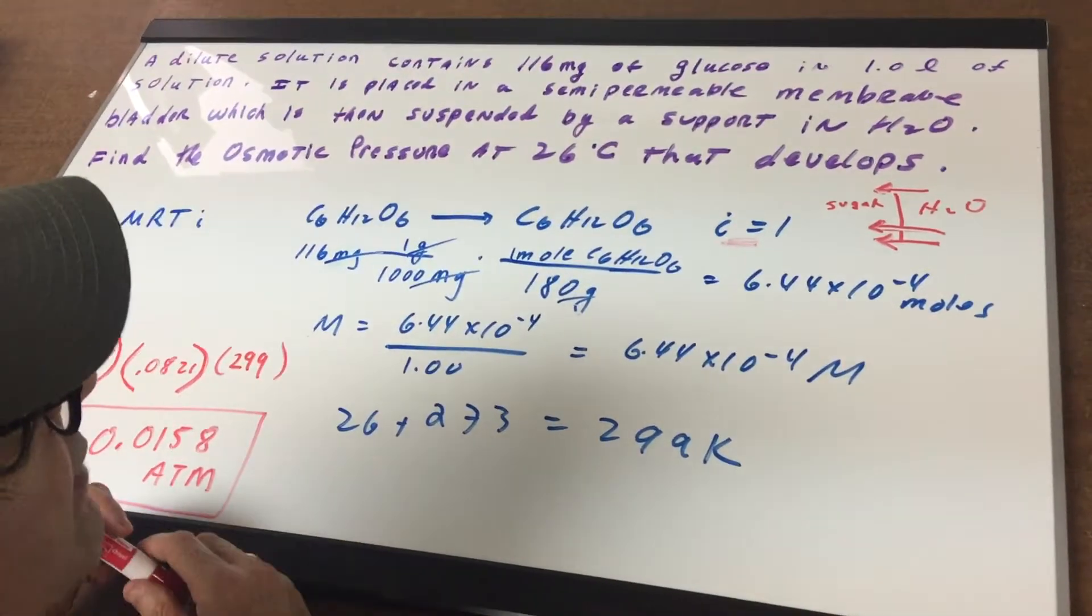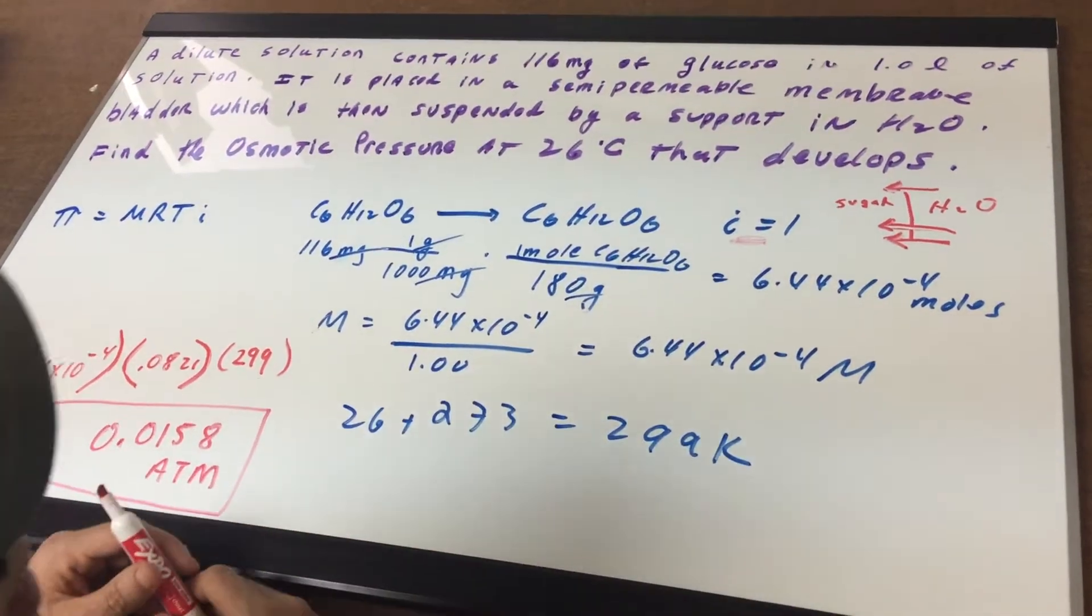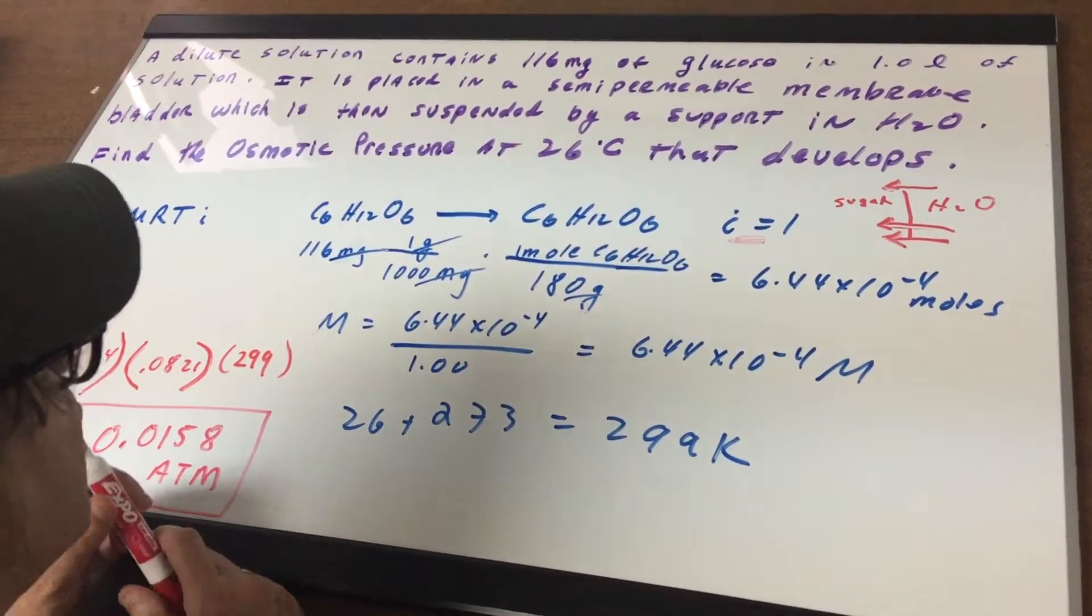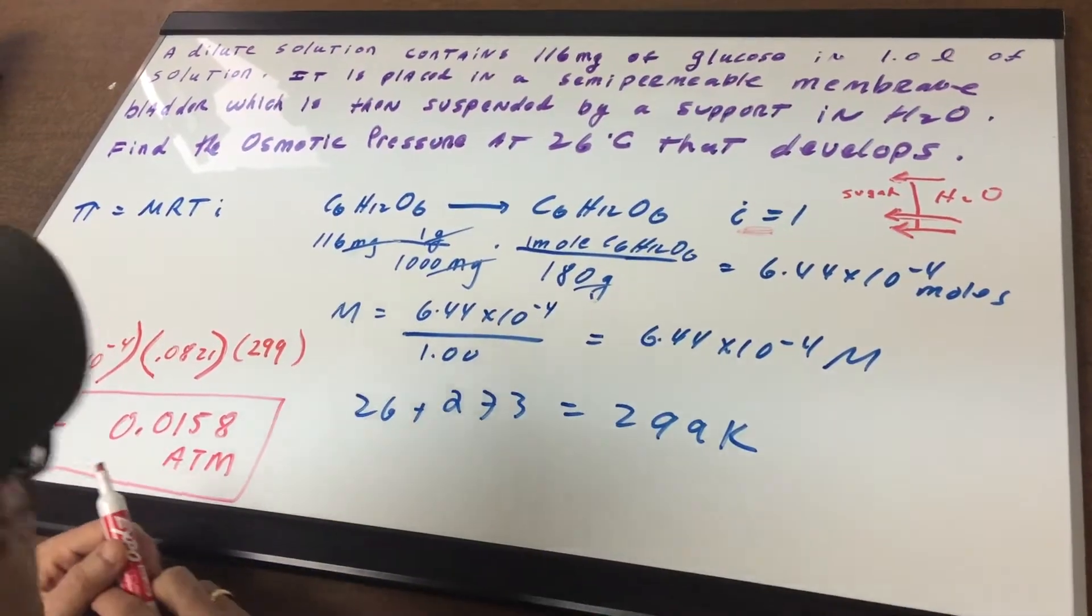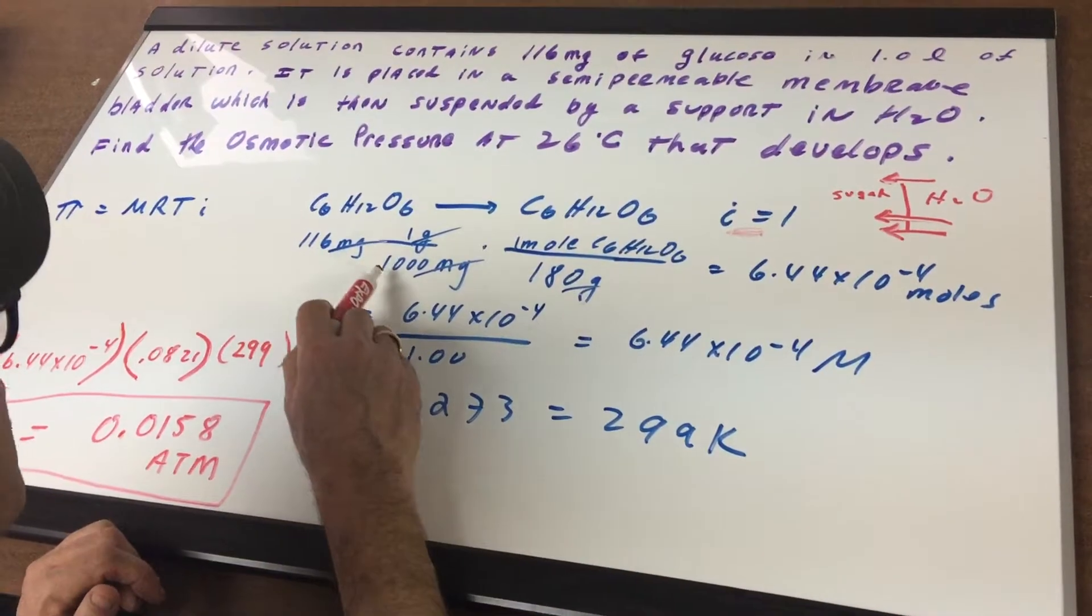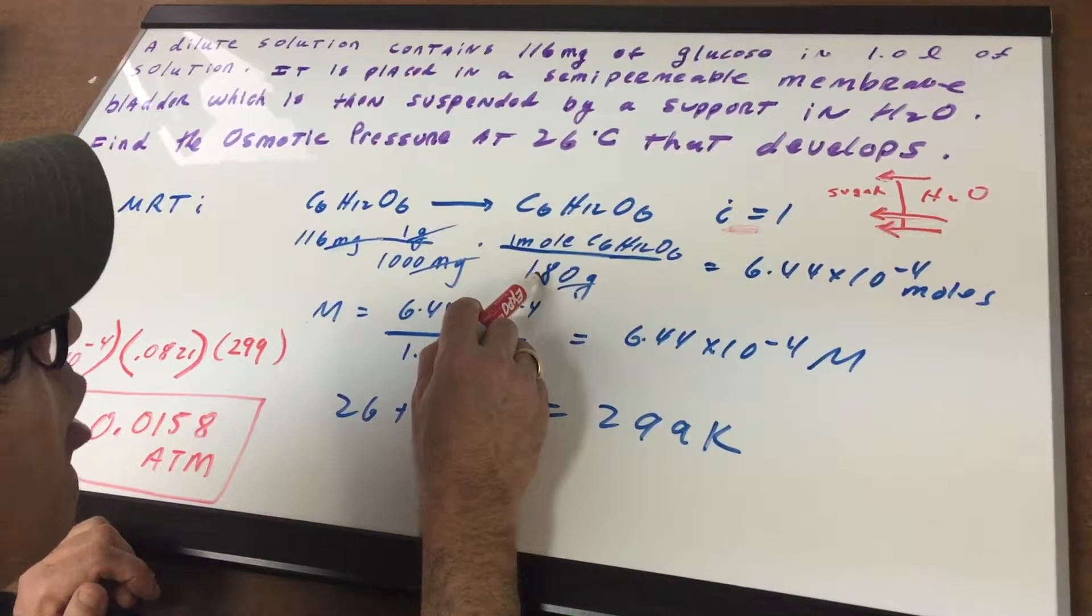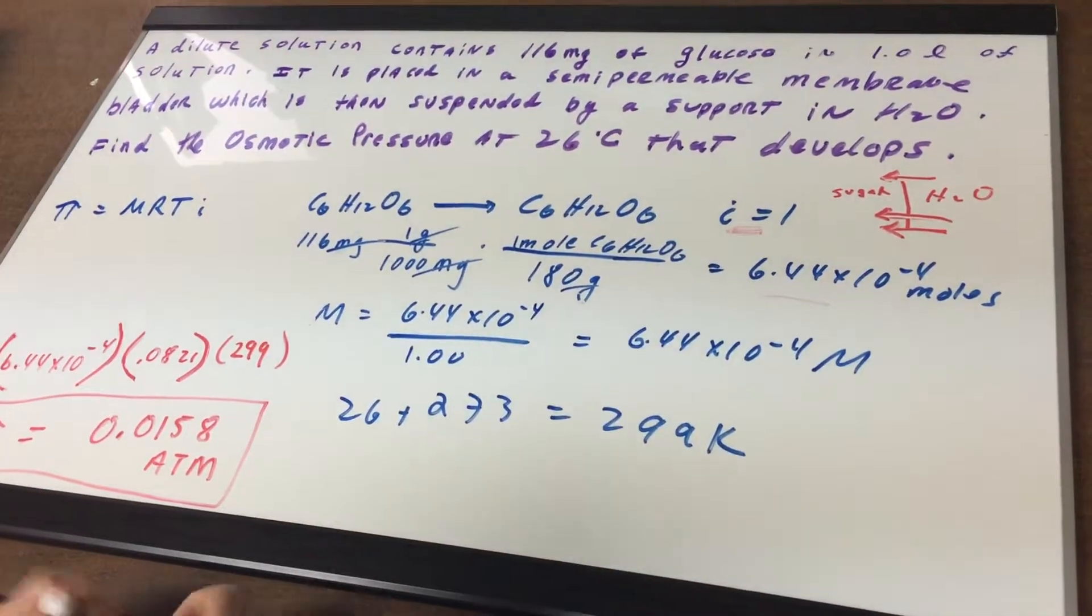Don't worry about the numbers being nice here. The numbers will work wonderfully in other problems and they'll also be very nice in the Destroyer. All I want you to understand is the chemistry. If you need to do this with a calculator, be my guest. When you divide 116 over a thousand over 180, you get 6.44 times 10 to the minus 4 moles.